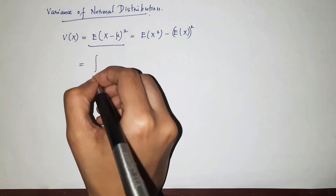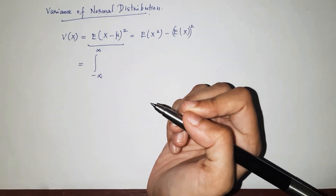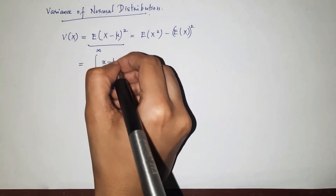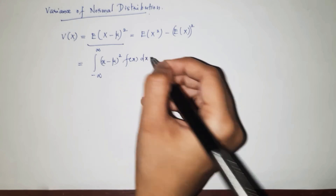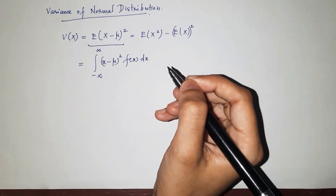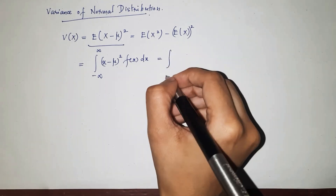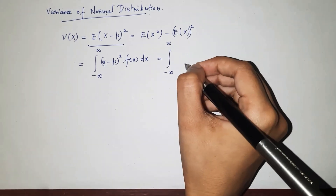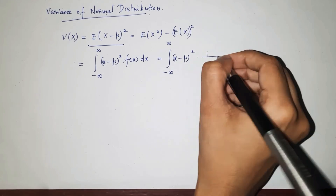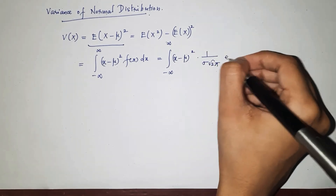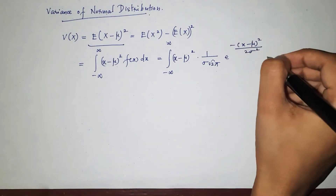So we write the integral from minus infinity to infinity of (x minus mu) squared times f(x) dx, which equals the integral from minus infinity to infinity of (x minus mu) squared times (1 over sigma root 2 pi) times e raised to minus (x minus mu) squared divided by 2 sigma squared, dx.